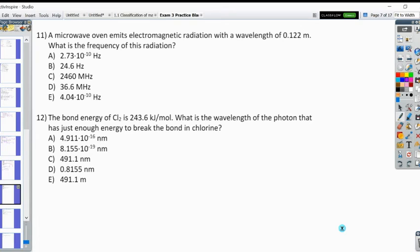We're sitting for time here, get one more done. All right, so for a microwave oven that emits electromagnetic radiation with a wavelength of 0.122 meters, what is the frequency? So we're going to use the speed of light equation. So if we multiply the frequency times the wavelength of any electromagnetic radiation we always get the speed of light.